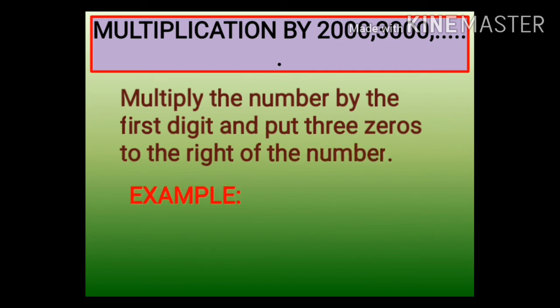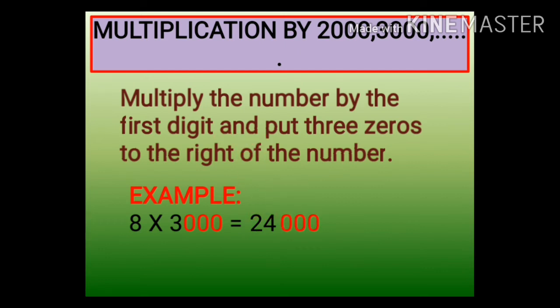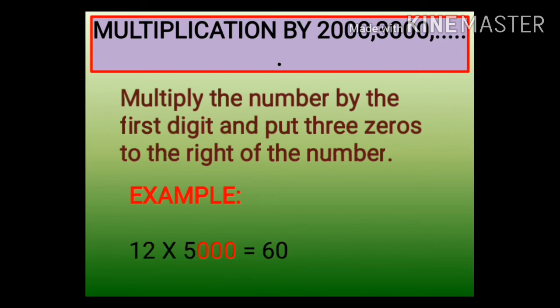Let us see some examples. 8 into 3000: first multiply 8 into 3, which is equal to 24, and then place three zeros. Next example: 12 into 5000. What is 12 into 5? That is equal to 60. Then place three zeros to the right, and you get the answer as 60,000.